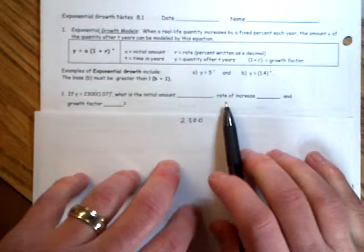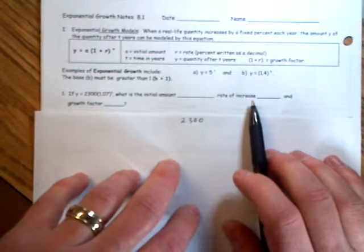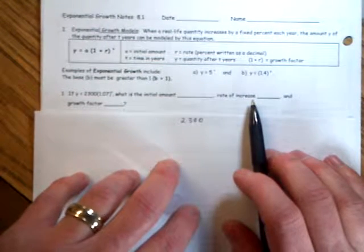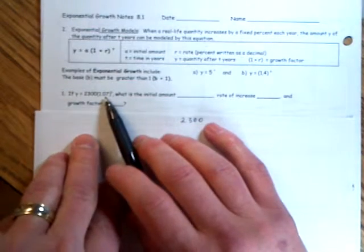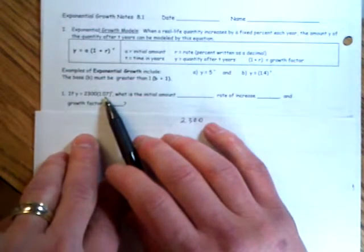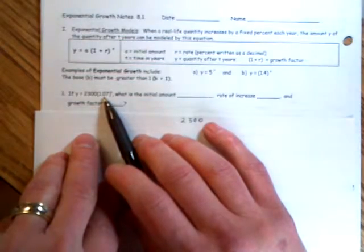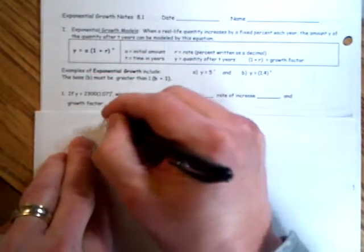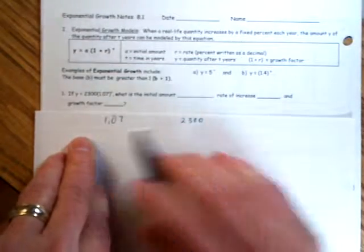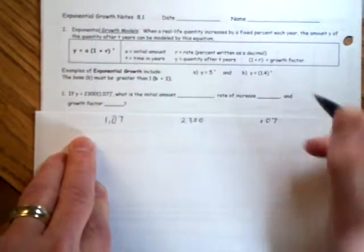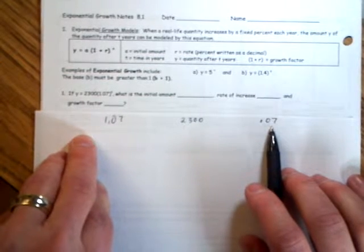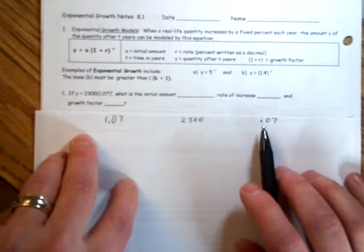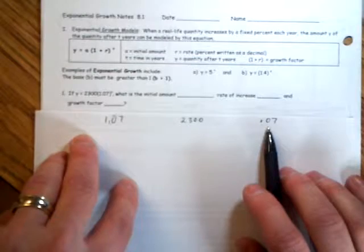And then it says the rate of increase. The rate of increase is what you get after you subtract 1 from the growth factor. This growth factor is 1.07, and when you subtract 1 from that, you get 0.07. That's a 7% annual interest rate, or rate of increase. So please put those three numbers where they go.